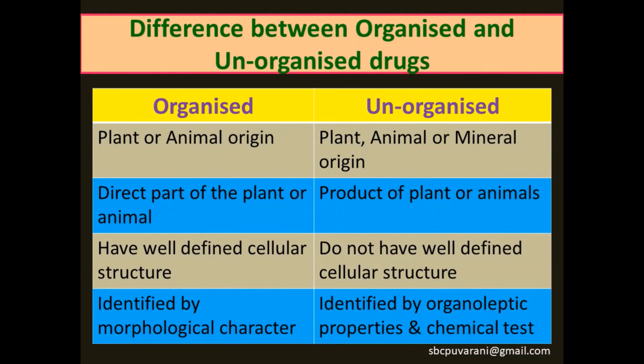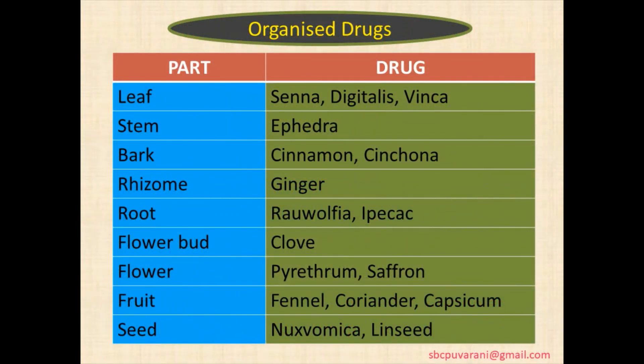Difference between organized and unorganized drugs: Organized drugs are obtained directly from plants or animals. Unorganized drugs are obtained from plants, minerals, and animals — they are a product of plant or animal. Organized drugs have a defined cellular structure, whereas unorganized drugs do not have any cellular structure. Organized drugs are identified by morphological characters, while unorganized drugs are identified by organoleptic properties as well as chemical tests.